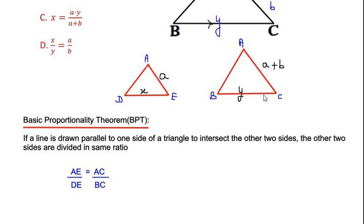From the triangle ABC, we have to take the corresponding sides. The corresponding side to AE is AC, so I have written AC divided by the corresponding side to DE, which is BC. I have written BC over here.